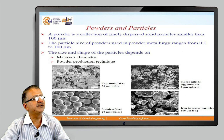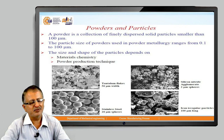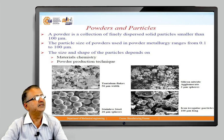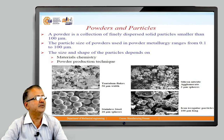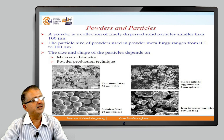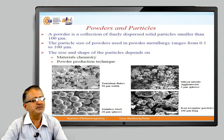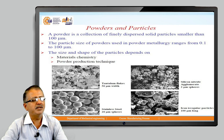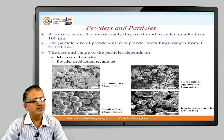Powder is a collection of finely dispersed solid particles. The size matters and is normally in the range of 100 micrometers. The particle size of powders used in powder metallurgy ranges from 0.1 to 100 microns. Examples of size and shape include tantalum flakes of 50 micron width, silicon nitride agglomerate of 2 micron spheres, stainless steel spheres of 20 microns, and iron irregular particles produced by mechanical methods at around 100 microns in size.